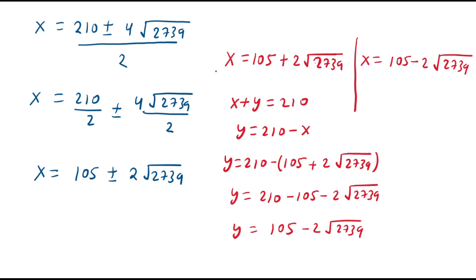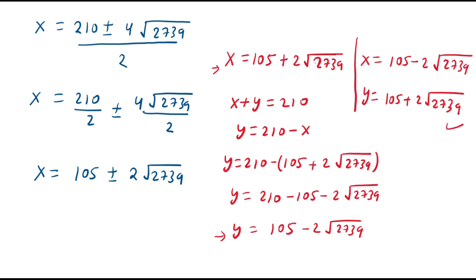If the length of this rectangle is 105 plus 2 times square root of 2739, then the breadth is 105 minus 2 times square root of 2739. And if x equals 105 minus 2 times square root of 2739, then y equals 105 plus 2 times square root of 2739. This is our final answer.